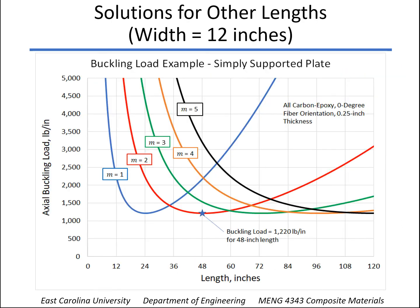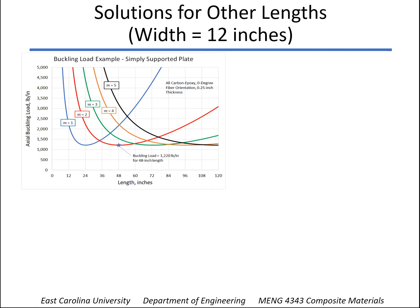Now, if we kind of plot this for different lengths, keeping that width of 12 inches consistent and the same design all the way across, here's where we calculate it at 1,220 pounds. And you can see up above that, this is for M equals 3, it was more than that. We also calculated for M equals 1, it was up here. And if we had tried 4 and 5. So once we find the smallest one and it starts going back up, we know we can quit. But for example, if when we get to about 34 inches, that's where the buckled shape changes.